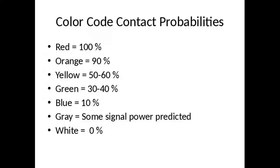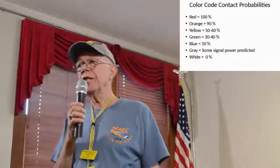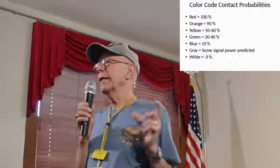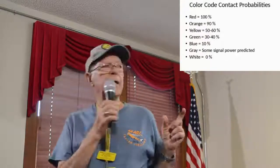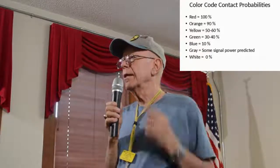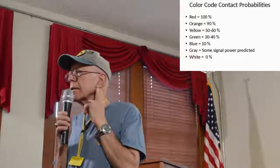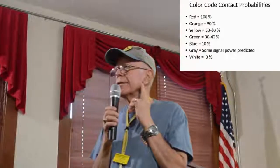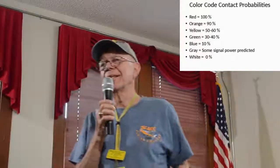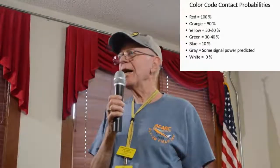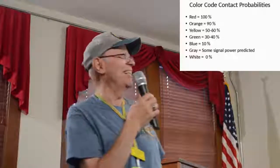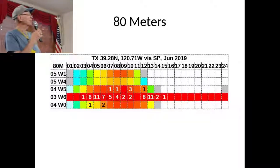What do the colors mean? If you see red, it means you have 100% probability in that slot, and on down to white, which says you have 0%. Gray is a unique color — it says something could happen, maybe. We'll actually demonstrate that as we go through the charts.